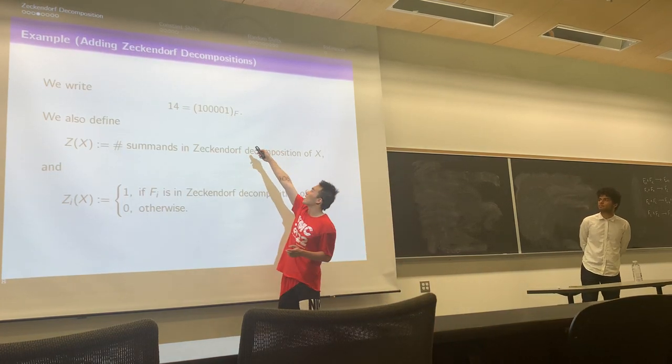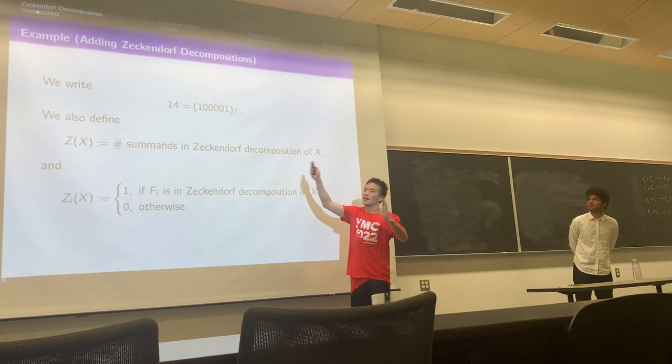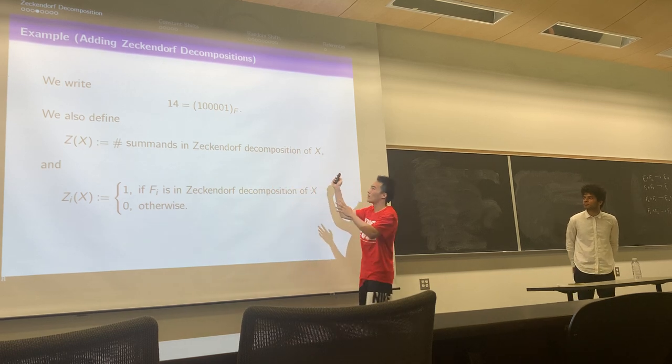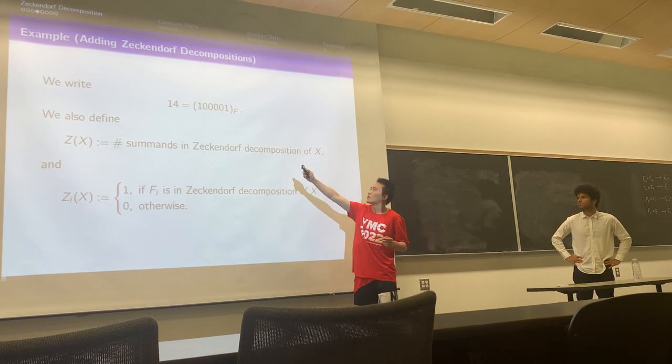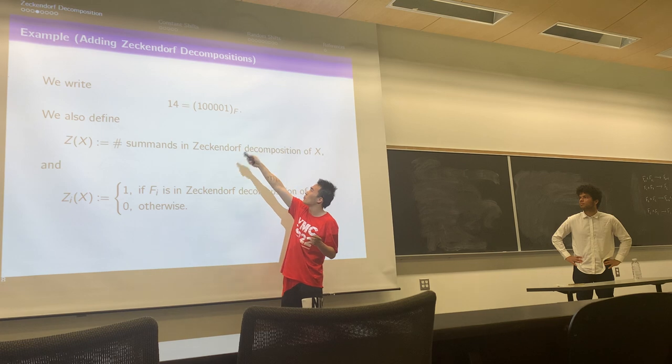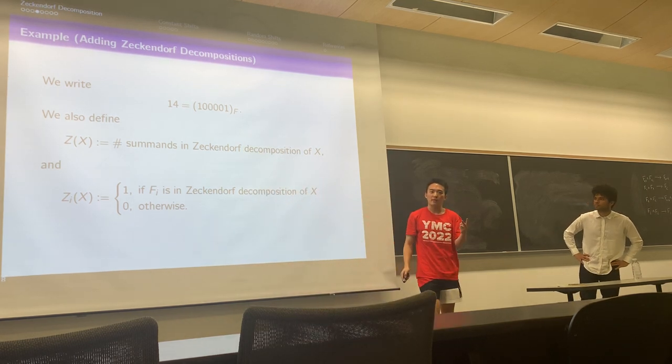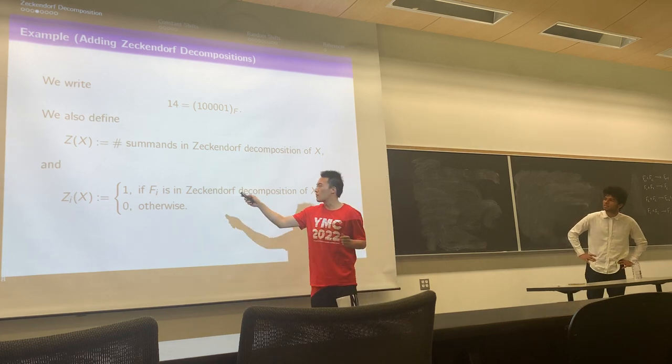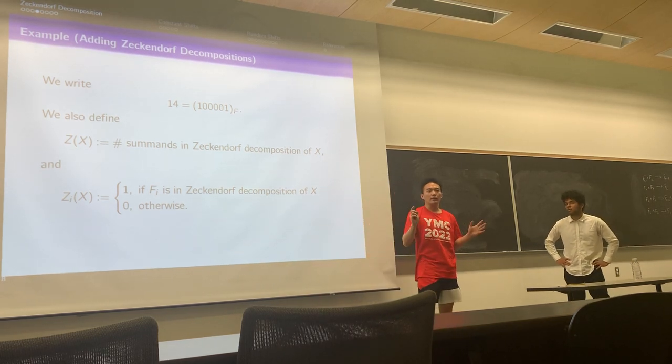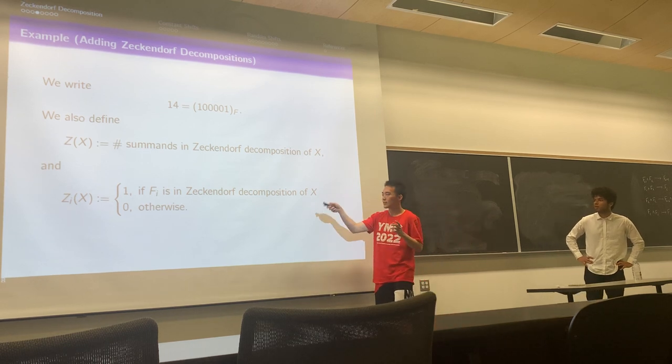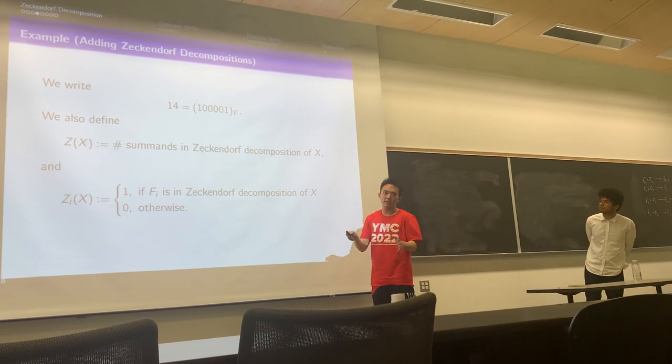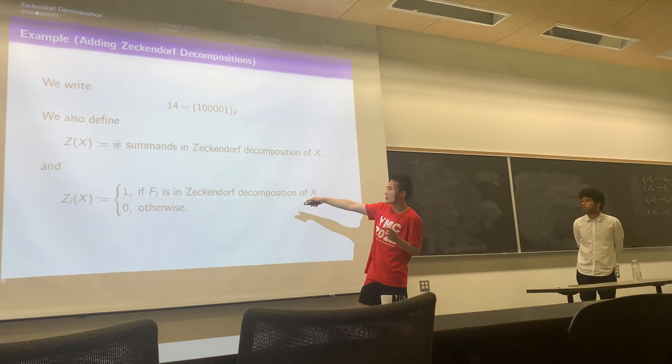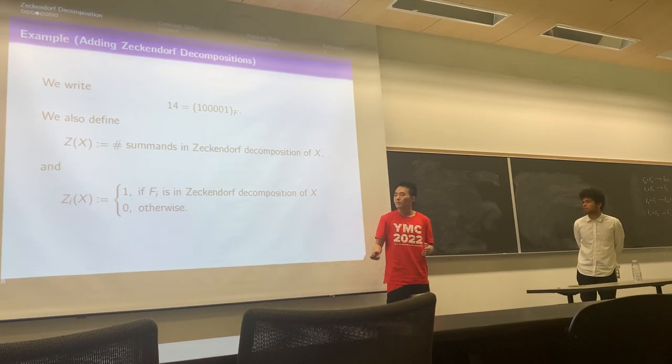We write the Zeckendorf decomposition of 14 as this string, and we define the number of summands in the Zeckendorf decomposition to be Z(x). In this case, Z(14) equals 2, because you have two ones in the decomposition. We also define Zᵢ(x) to be the indicator whether we have a summand in the i-th position of Fibonacci sequence. If Fᵢ is in your Zeckendorf decomposition, the quantity should be 1 and 0 elsewhere.